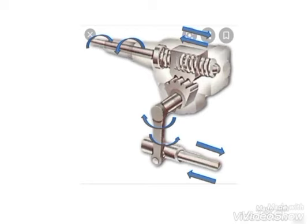The sector and pitman arm then undergo oscillatory motion in different directions. Finally, the drag link gets a translatory motion — straight line motion — which is transferred through the steering system. The advantage of this steering gearbox is reduced friction in the environment.